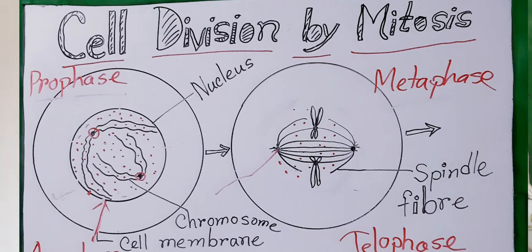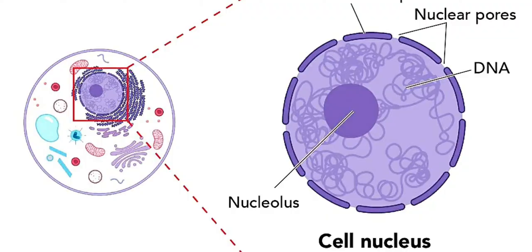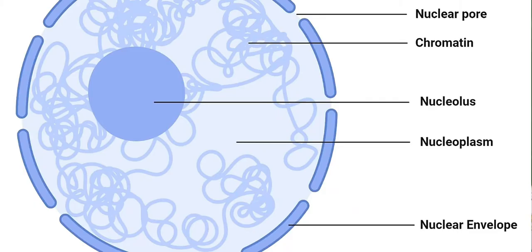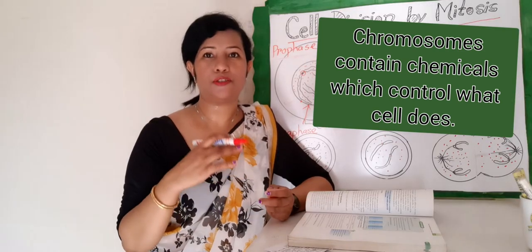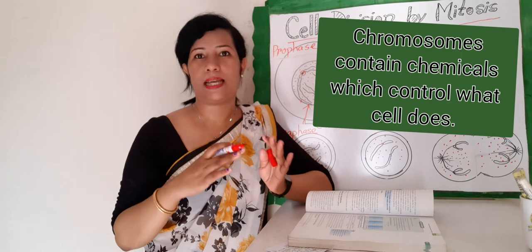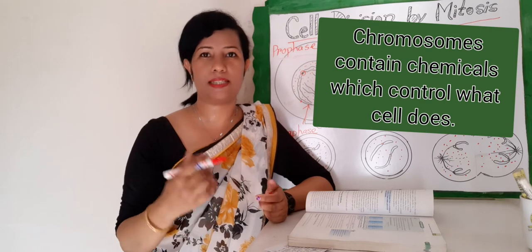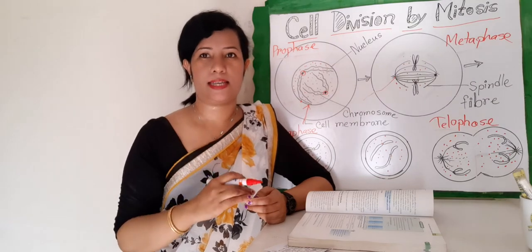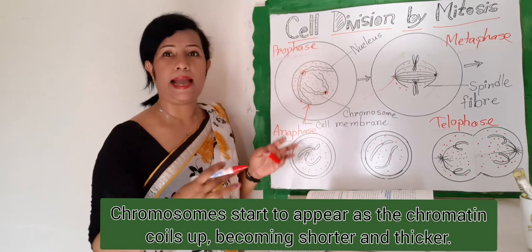When the cell is ready to divide, long thin double structures called chromosomes appear in the nucleus. Chromosomes contain chemicals that control what a cell does, and these chemicals also contain all the instructions needed to build a whole new organism from a single fertilized egg cell.